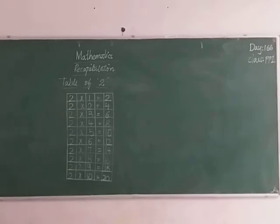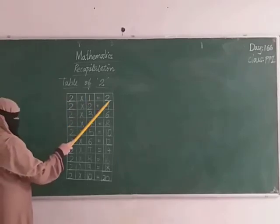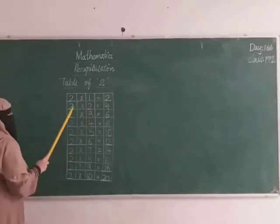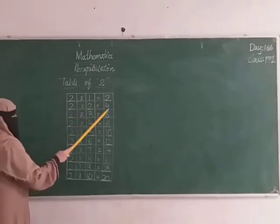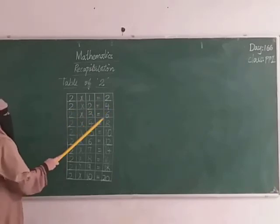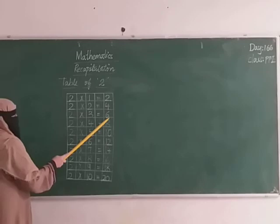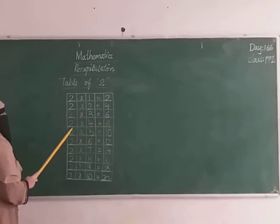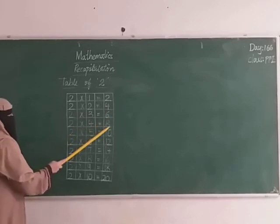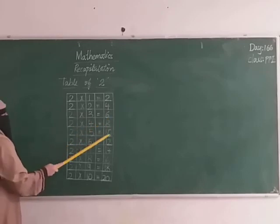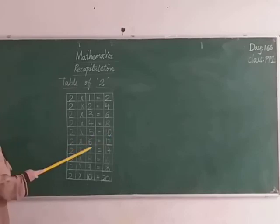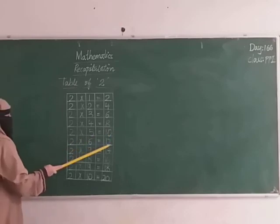Once again, we have to read this, don't we? See here. Two ones are two. Two twos are four. Two threes are six. Two fours are eight. Two fives are ten. Two sixes are twelve.